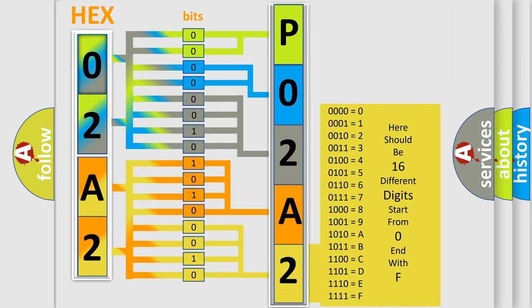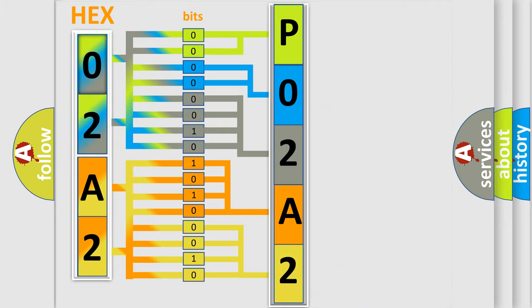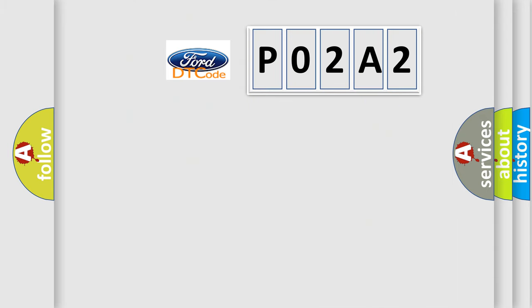We now know in what way the diagnostic tool translates the received information into a more comprehensible format. The number itself does not make sense to us if we cannot assign information about what it actually expresses. So, what does the diagnostic trouble code P02A2 interpret specifically for Infiniti car manufacturers?